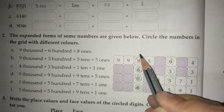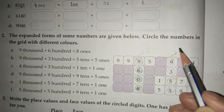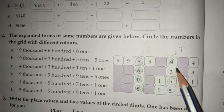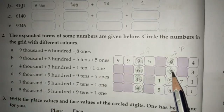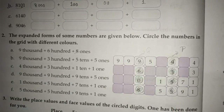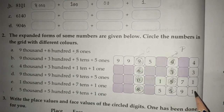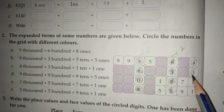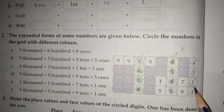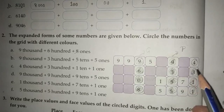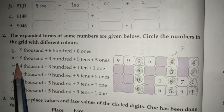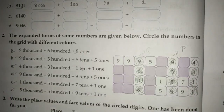For number b: 9,000 + 300 + 5 tens + 5 ones, so the number is 9,355. First circle it, then color it with a different color — for example, if you used green here, use pink or blue for the next. For number c: 4,000 + 300 + 1 ten + 1 one, so 4,311. Circle it and color it. I have done a, b, and c; you can do d, e, and f by yourself.